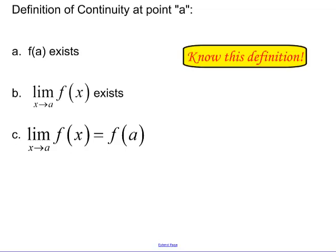Here's the definition of continuity at a point A. I want you guys to know this definition — this is going to be super important as we work through the year. Part A: the function value has to exist. Part B: the limit as you approach that value also has to exist. And then part C: the limit has to equal the function value.